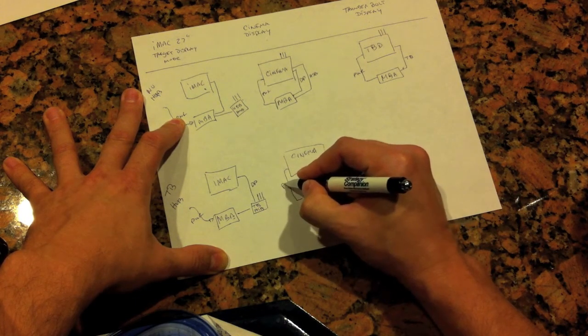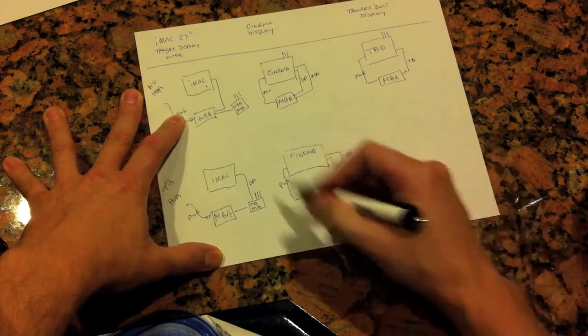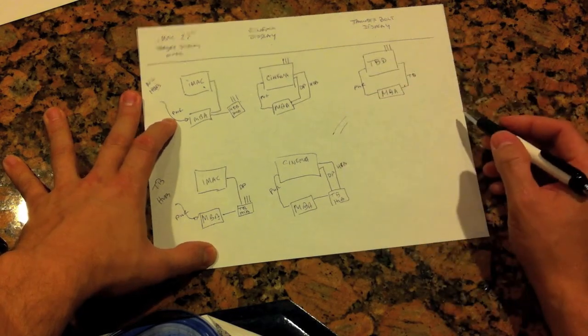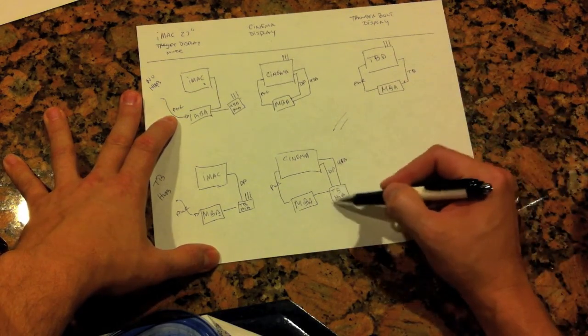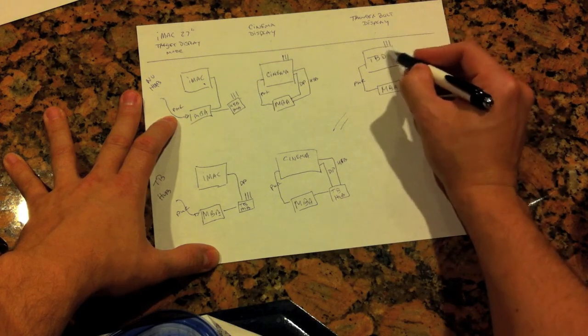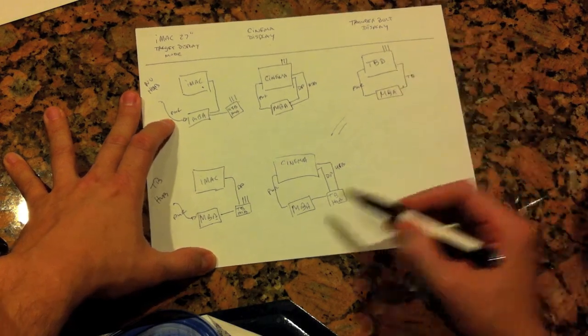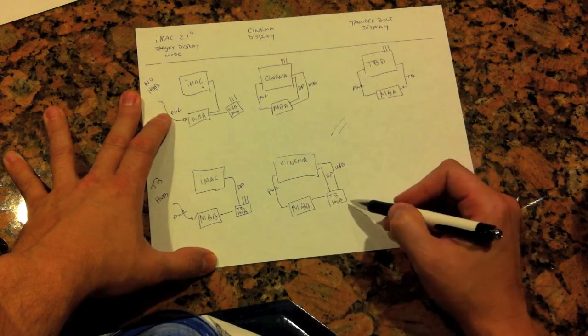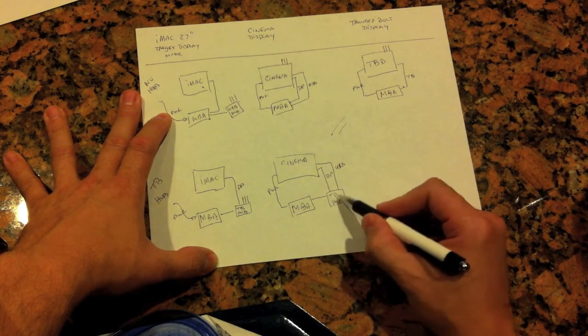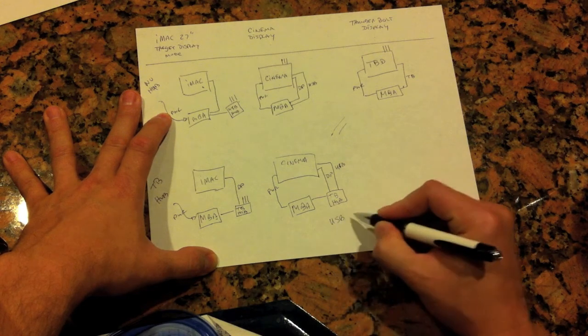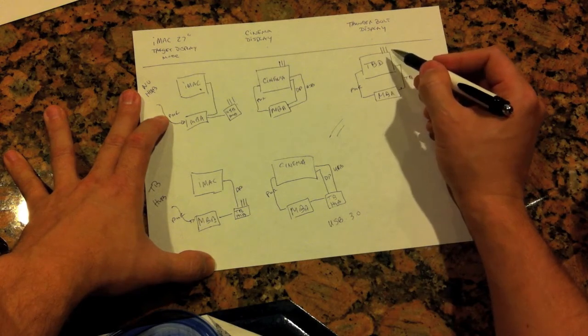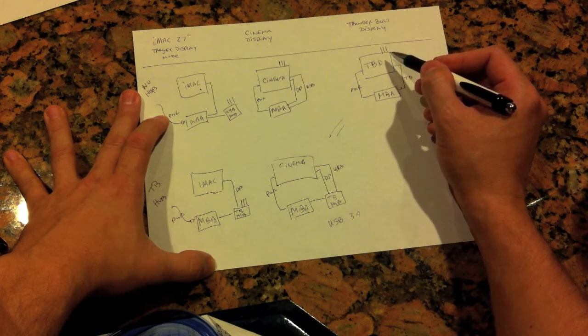Now in this scenario here, this is almost identical carbon copy to what we have over here. The only difference is that the Thunderbolt hub is external versus a Thunderbolt Display having the hub built into the back. Here there's actually probably even a better advantage: most likely, the future Thunderbolt hubs will support USB 3.0, which the current Thunderbolt Display does not, presumably because they're trying to push the Thunderbolt port as opposed to USB 3.0.